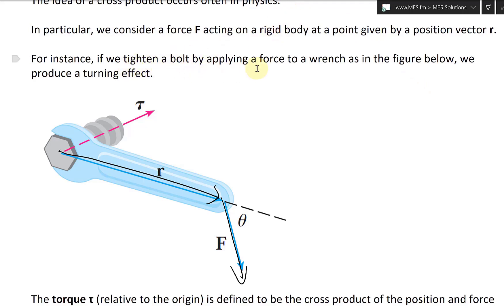For instance, if we tighten a bolt by applying a force to a wrench, as in the figure below, we produce a turning effect, and the only part of it that actually generates that is the perpendicular one. In other words, the sine of that function, sine of the force going perpendicular to this direction there.